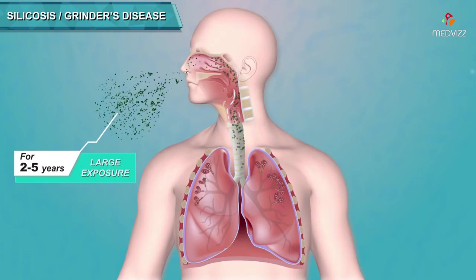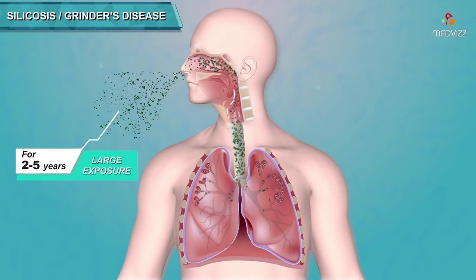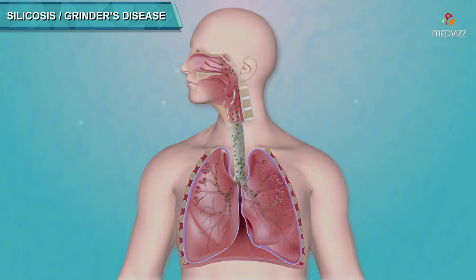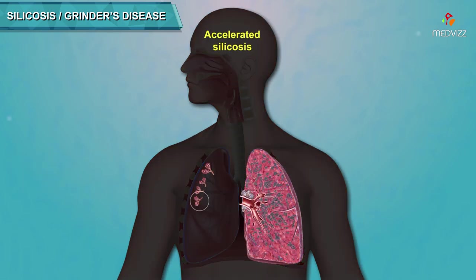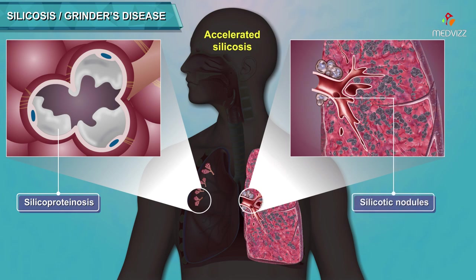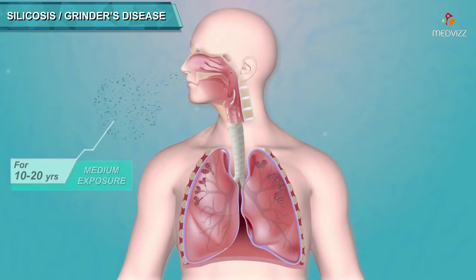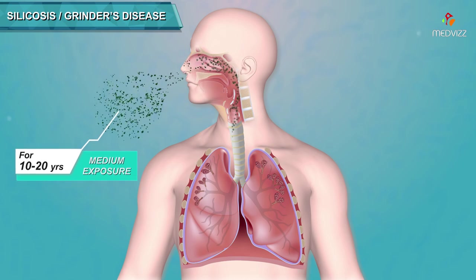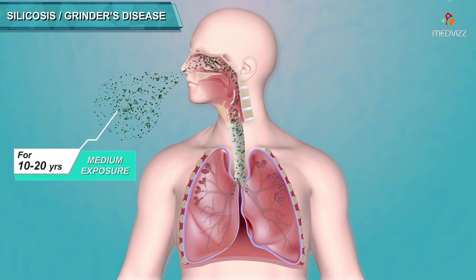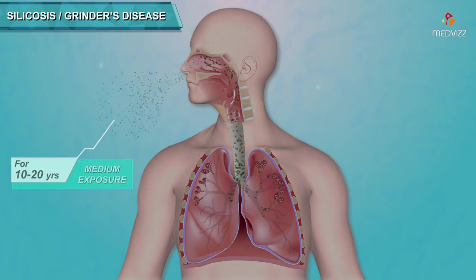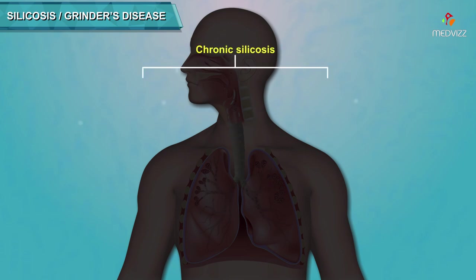With a large exposure over 2–5 years, accelerated silicosis occurs — a combination of silicoproteinosis and silicotic nodules. With medium exposure of less than 30% silica content over a long term of 10–20 years, chronic silicosis develops.